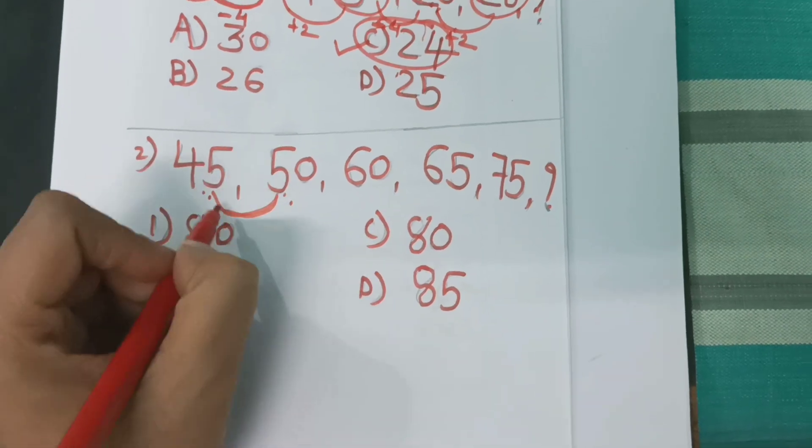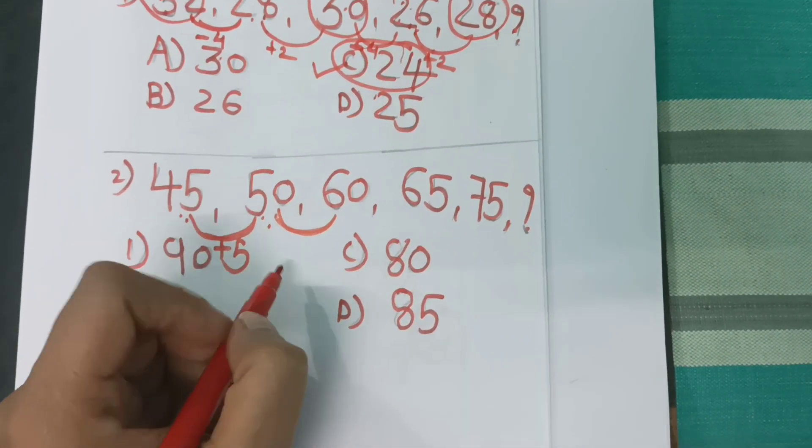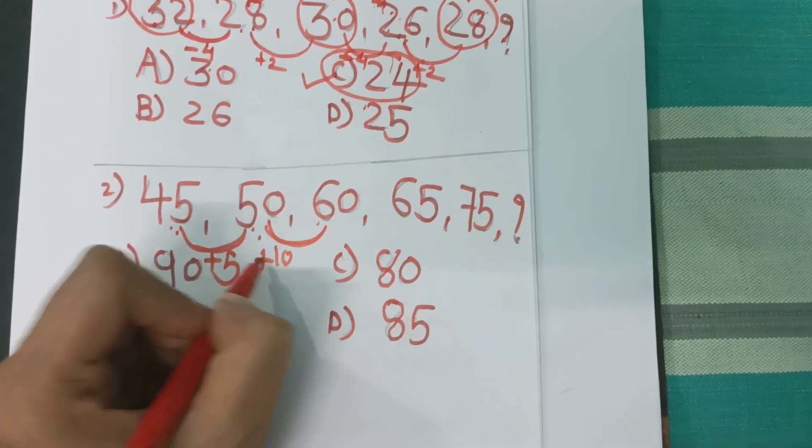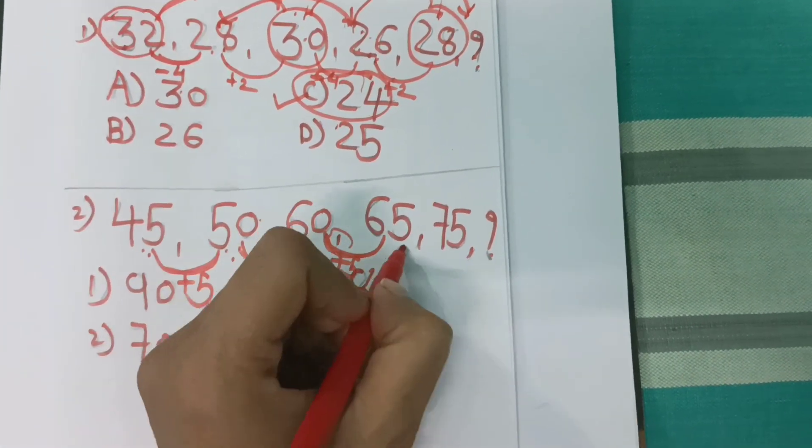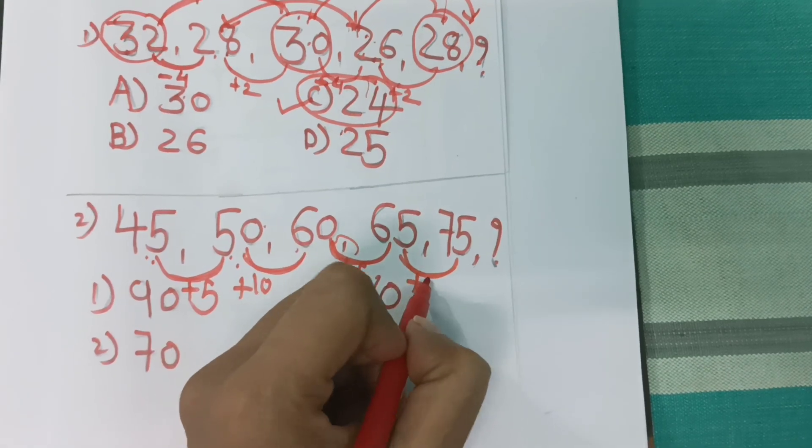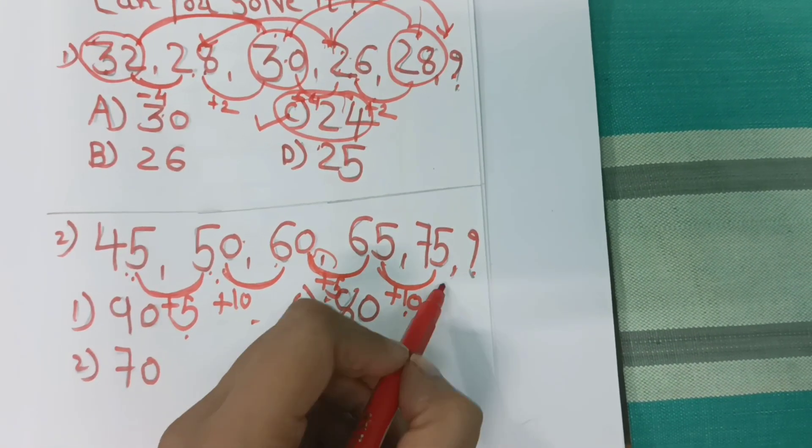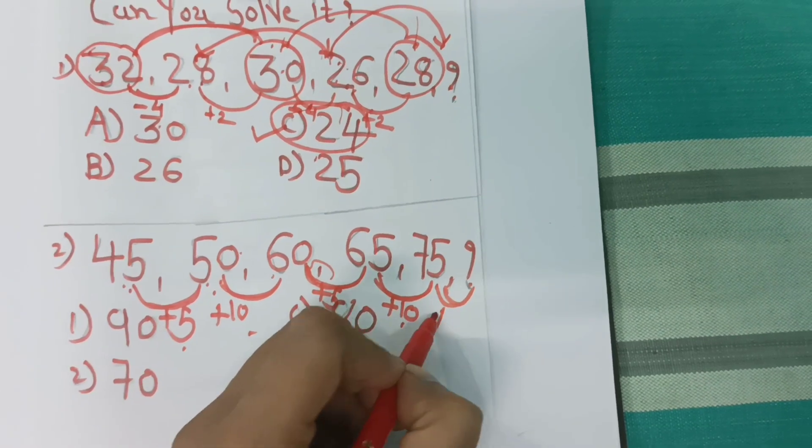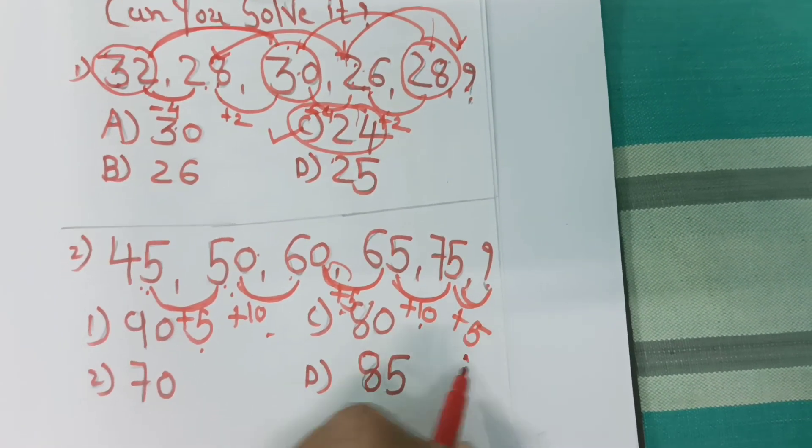See what is the difference between two? That is 5 plus 5, here 10. Here the difference is plus 5, here the difference is plus 10, plus 5, plus 10, plus 5, plus 10. Then what? Here plus 5 to 75, plus 5, that is 80. So the answer is 80.